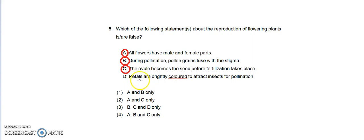What about D? Petals are brightly colored to attract insects for pollination. Well, D is true. So D is not part of the answer that we are looking for. Let's cancel out D.